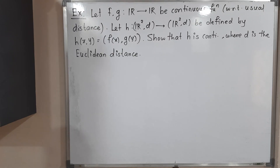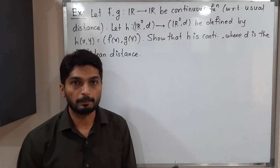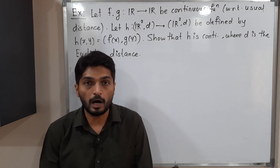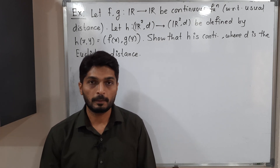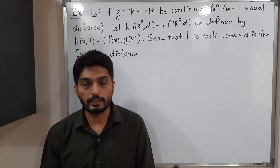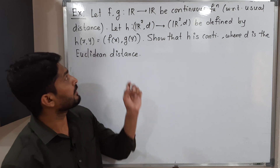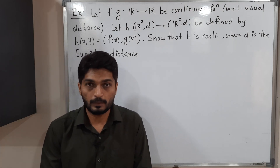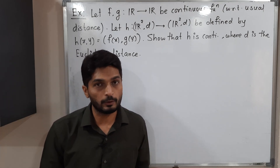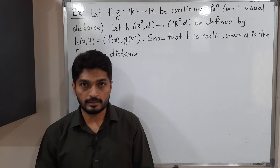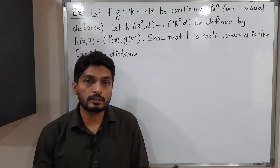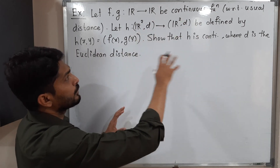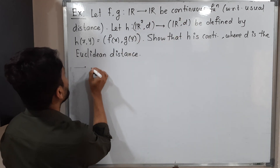Hi everyone. In this video we are going to discuss this example. We have two functions F and G defined from ℝ to ℝ with the usual distance, given that both functions are continuous. With the help of F and G, one more function H is defined, which maps ℝ² to ℝ² with the Euclidean distance, and we have to prove that H is also a continuous function.